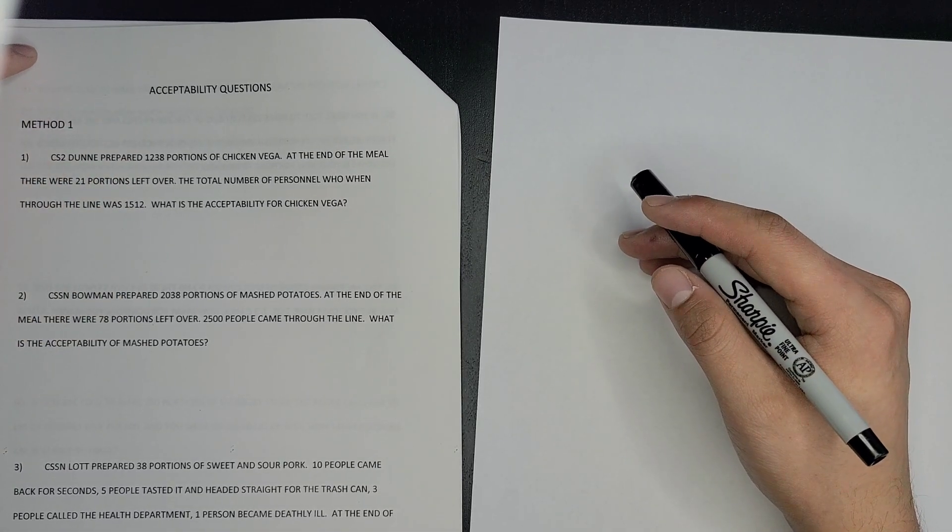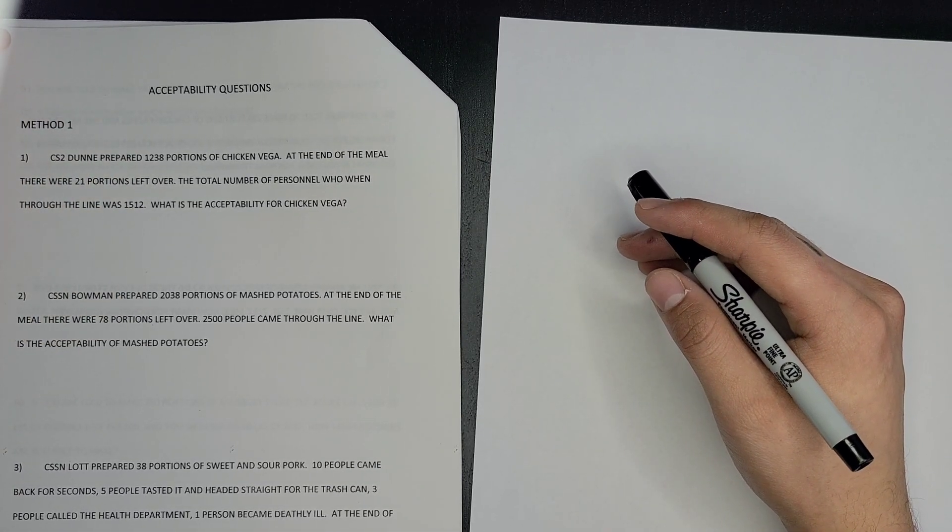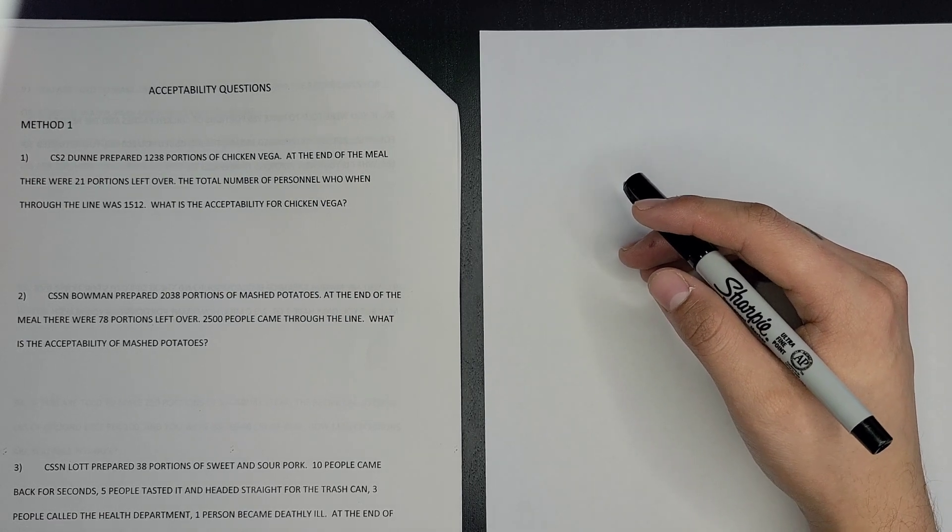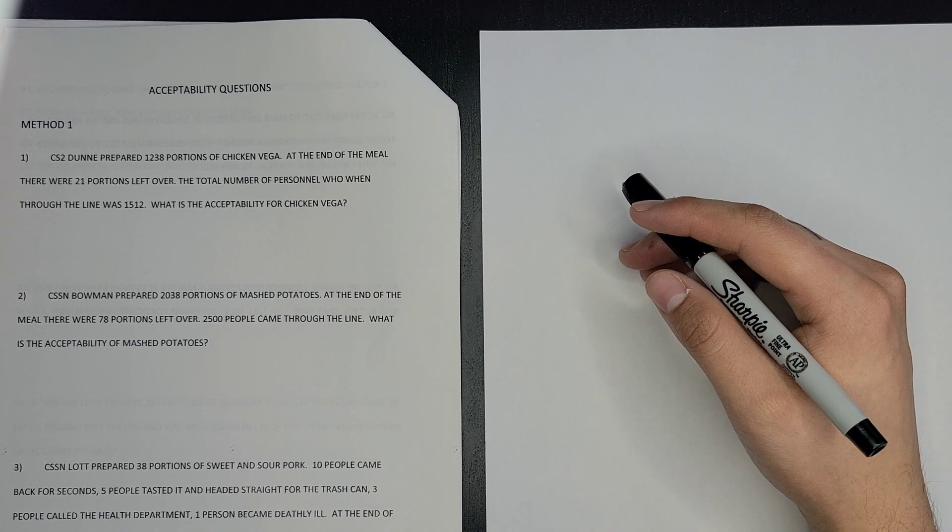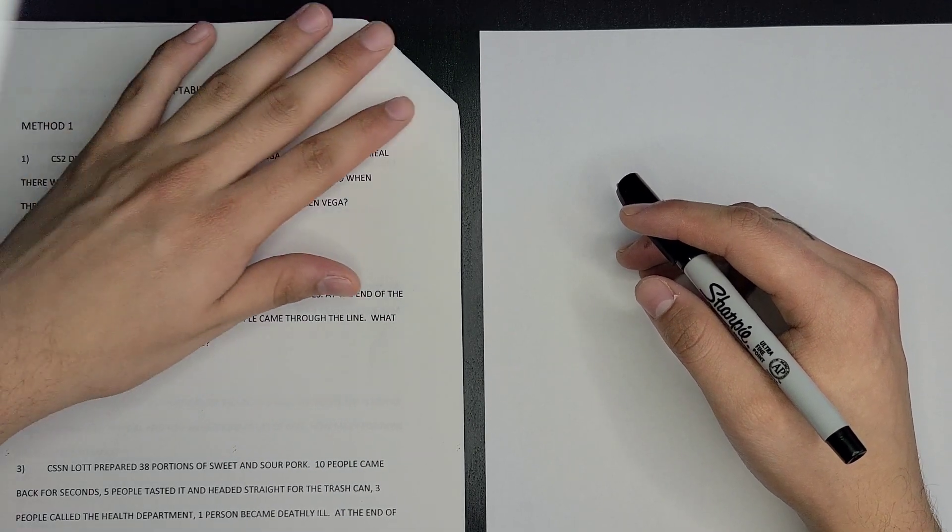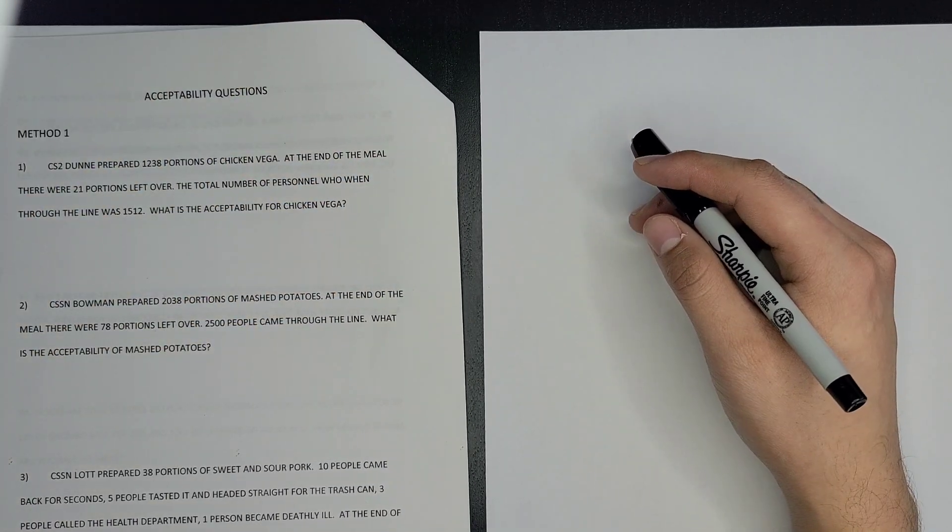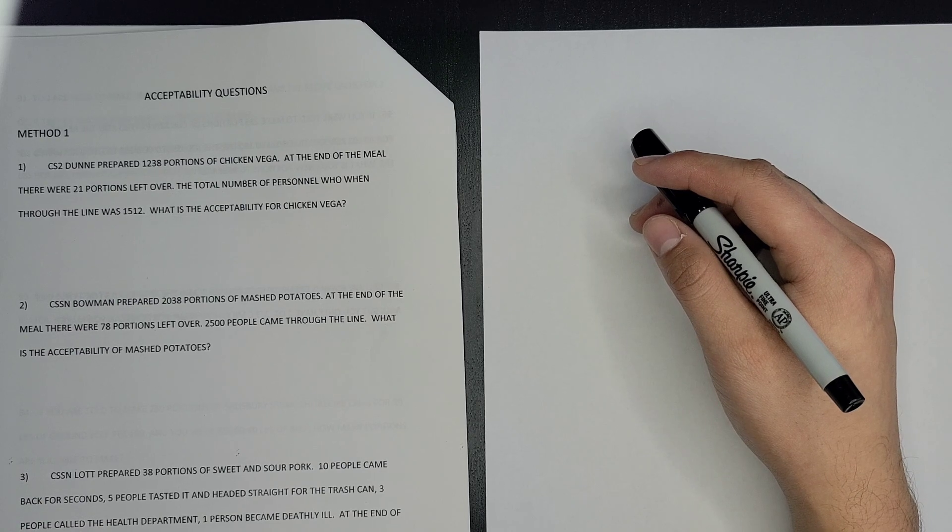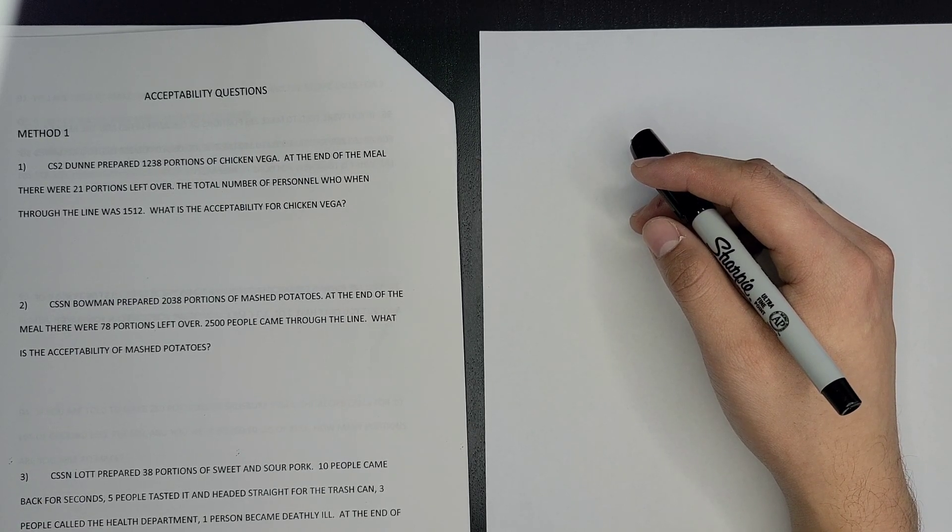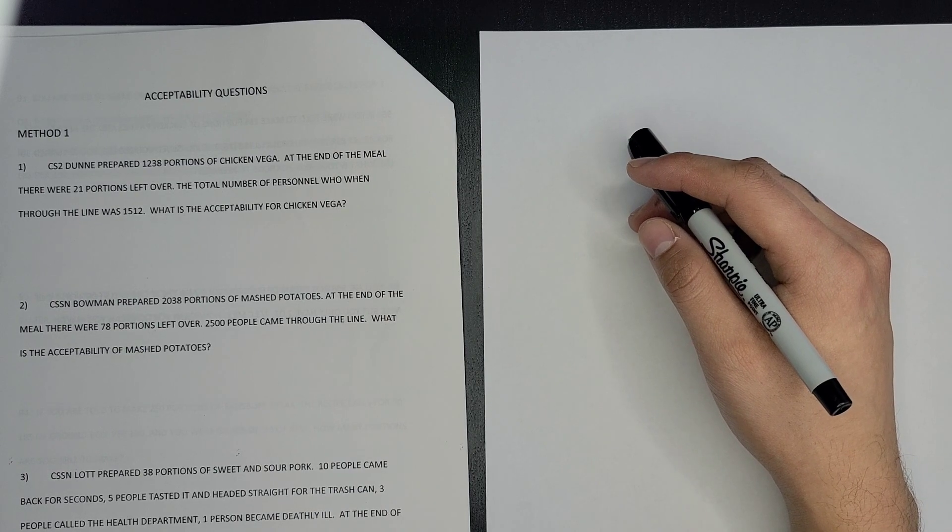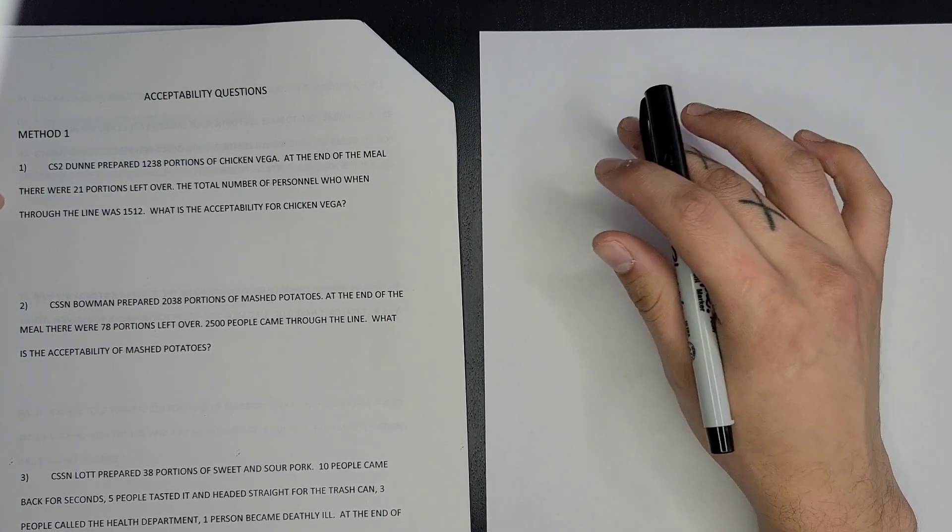Hey everyone, today we're going to be going over some acceptability problems. We're going to be using the first method, which is used when a food item prepared does not run out. Acceptability is a percentage that determines the amount of people that ate a specific product.